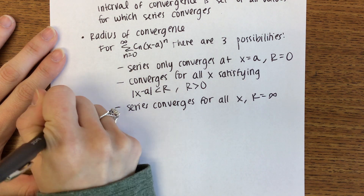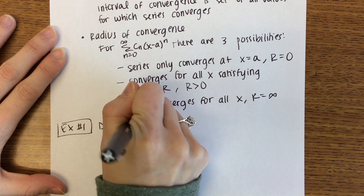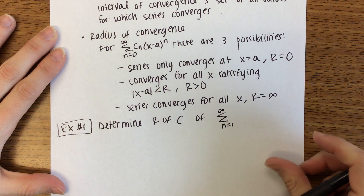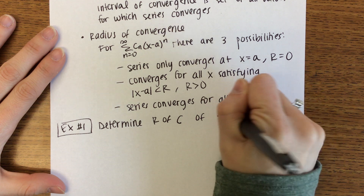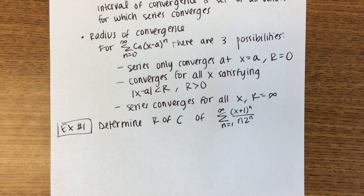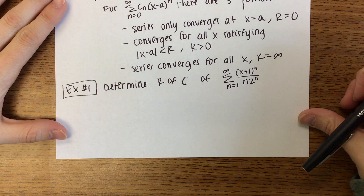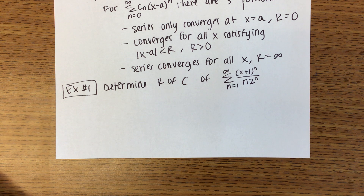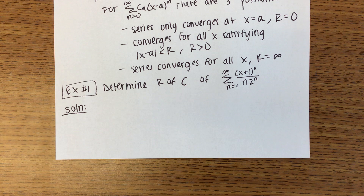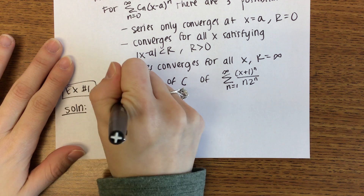Our first example: determine the radius of convergence of the power series — the sum from n equals 1 to infinity of the quantity x plus 1 to the n over n times 2 to the n. Do you remember from BC Calculus all those different convergence tests? We are going to use one. Any guess? It starts with an R — the ratio test.